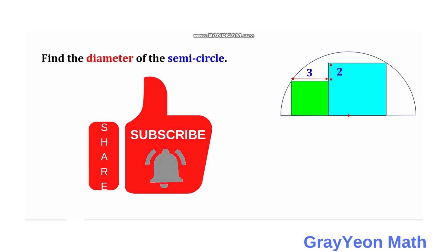Welcome to Grayon. We are asked to solve this problem. We have a semicircle and inside this semicircle are two squares, a blue and a green one.